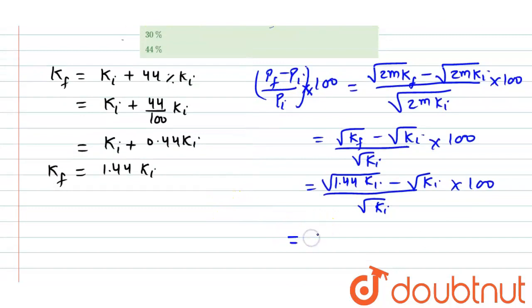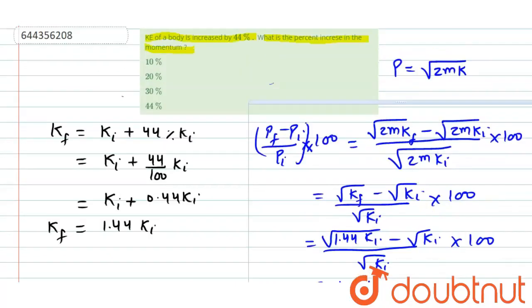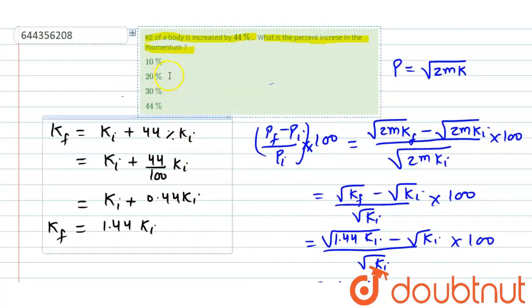After solving this whole term, we are left with 1.2 minus 1 divided by 1 into 100. It will give us a value of 20% because it is 0.2 multiplied by 100. We can say that percentage change in momentum will be 20% and option number 2 is correct.